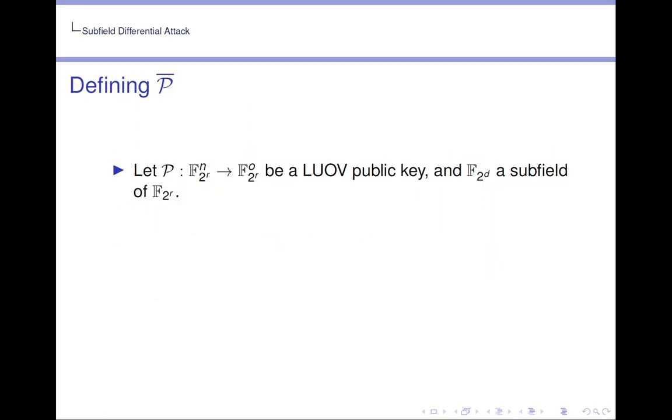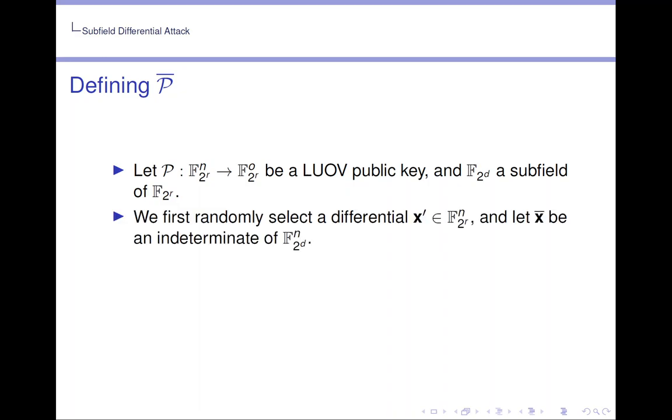So let P be an LUOV public key and F_{2^d} be a subfield of F_{2^r}. We first randomly select the differential x' in F_{2^r}^n and let x̄ be an indeterminant of F_{2^d}^n. Then we define a map P̄ equals P evaluated at x̄ plus x'. And this maps F_{2^d}^n to F_{2^r}^o. So we've shrunk our domain.